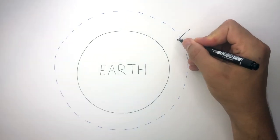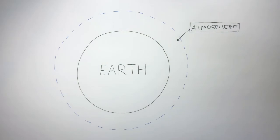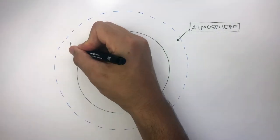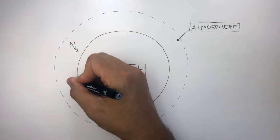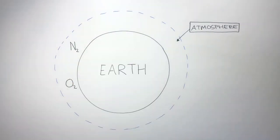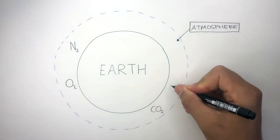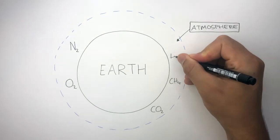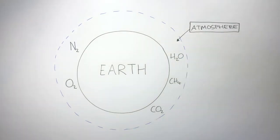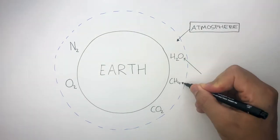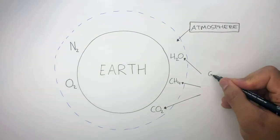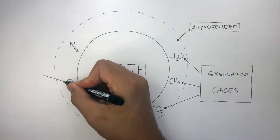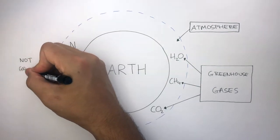Within this area is the atmosphere, and the atmosphere contains gases including N2 which is nitrogen, O2 which is oxygen, CO2 which is carbon dioxide, CH4 which is methane, and H2O which is water vapour. Water vapour, methane, and carbon dioxide are all greenhouse gases, whereas oxygen and nitrogen are not greenhouse gases.